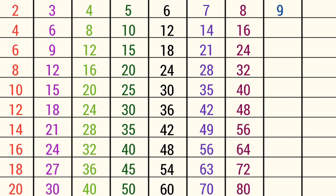9 ones are 9, 9 twos are 18, 9 threes are 27, 9 fours are 36, 9 fives are 45, 9 sixes are 54.